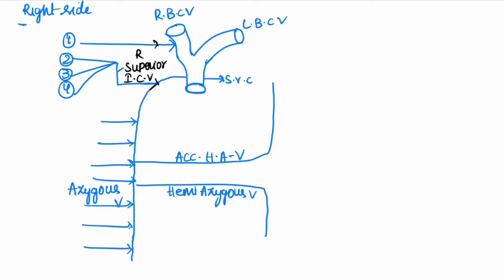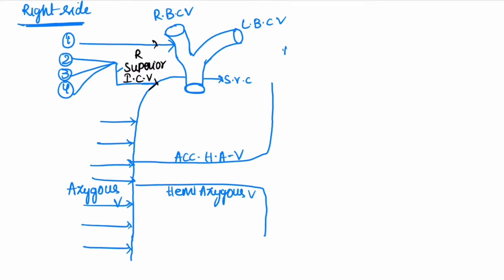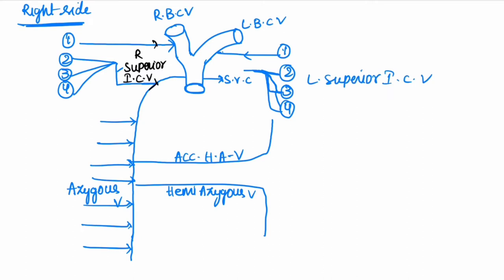Now let us discuss about the left side. Here, the first intercostal vein drains into the left brachiocephalic vein. The second, third, and fourth intercostal veins combine together to form the left superior intercostal vein. This left superior intercostal vein drains into the brachiocephalic vein. The remaining 5th, 6th, 7th, and 8th intercostal veins drain into the accessory hemiazygous vein.